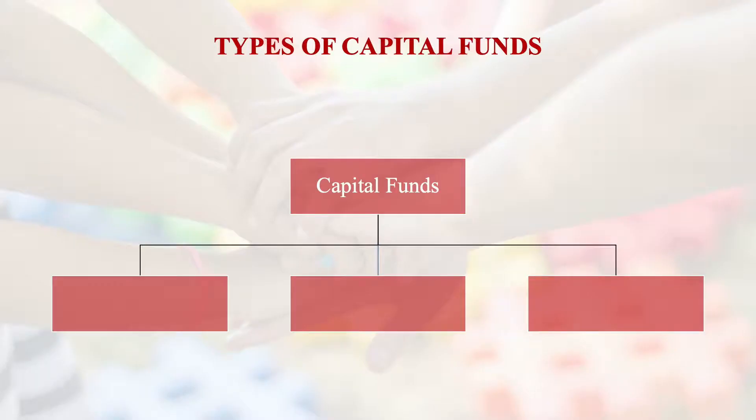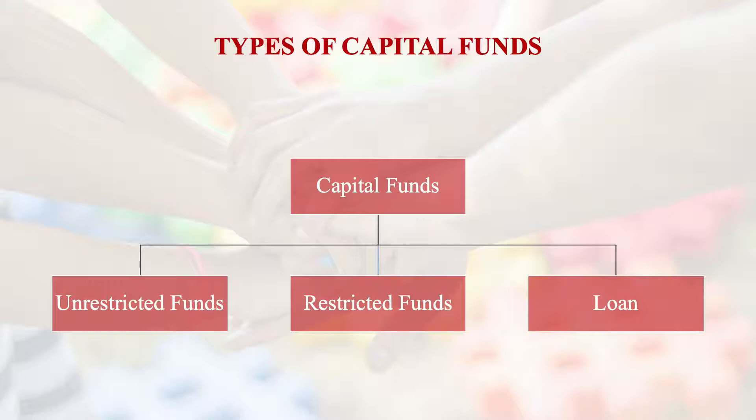There are three types of capital funds. The first is unrestricted funds, the second is restricted funds, and the third is loans. All three are used as part of capital funds. For organizations, unrestricted funds are one of the major forms of funds. They can be in the form of corpus or general fund.